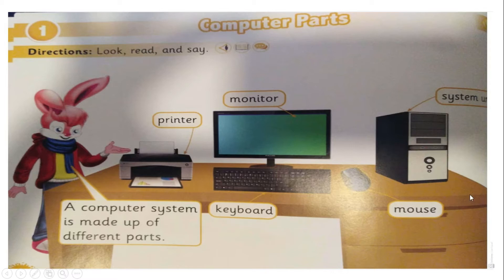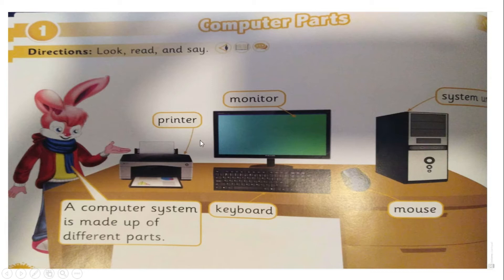And this small one is the mouse. And this one is the system unit. The system unit is like the brain — it has all the information. These are the main parts of the computer. Again: printer, monitor, keyboard.